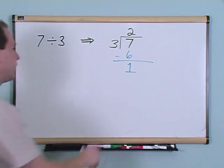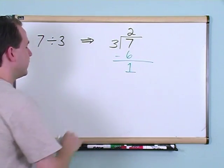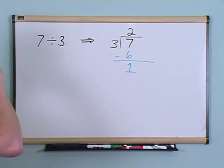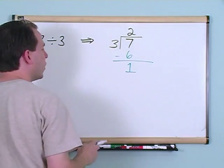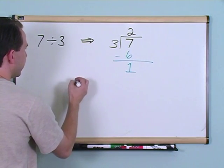Now, when you have a number down here below, you remember in all the other problems we had zero, but now we have a one. So the question is, can three go into one? That's what you need to ask yourself next. Can three go into one?